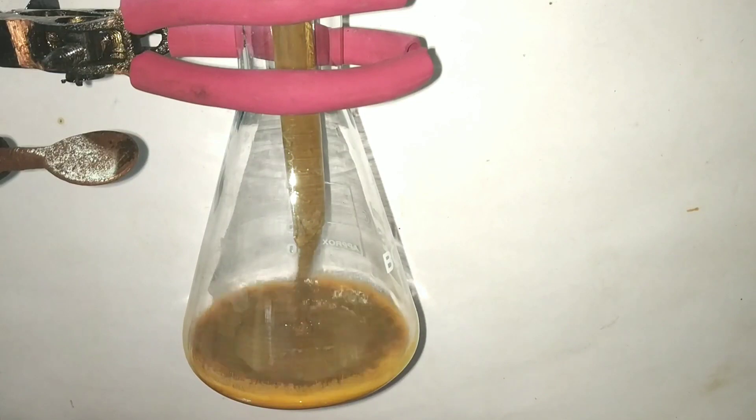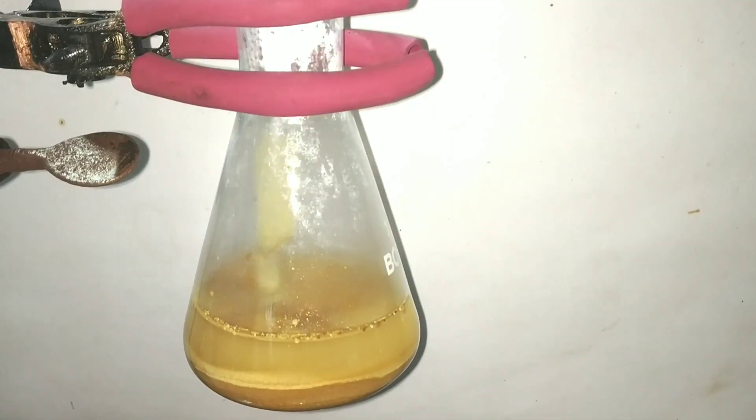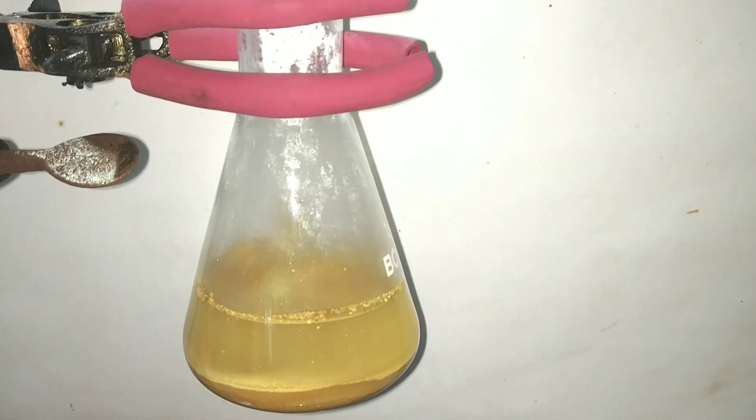I had to transfer everything into a bigger container since that small round bottom flask was not having enough space to hold the volume of mercury oxides. Later when I added the rest of the sodium hydroxide, the beautiful precipitate of mercury 2 oxide formed.